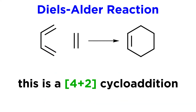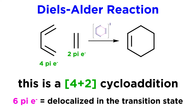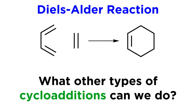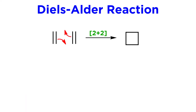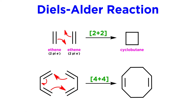We should also understand that the Diels-Alder reaction is a 4+2 cycloaddition. This means that the diene contributes 4 pi electrons and the dienophile contributes 2, and these 6 pi electrons involved in the cyclization are the electrons delocalized in the transition state. We could then wonder what other types of cycloadditions are possible — can we do 2+2 or 4+4 as well? We could imagine ethene reacting with itself to form cyclobutane, or a diene reacting with itself to produce a cyclooctadiene.